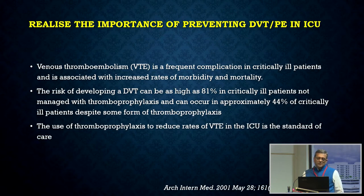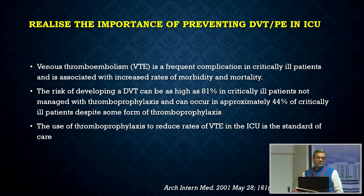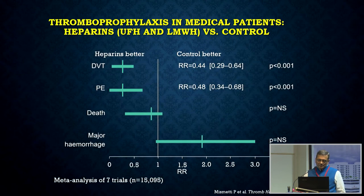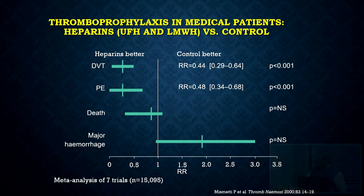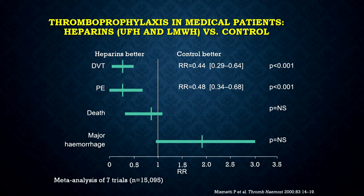The use of thromboprophylaxis to reduce rates of VTE in ICU is the standard of care. It will be an act of omission if you have not given thromboprophylaxis to a relevant patient in the ICU. Data from several randomized studies of heparins versus nothing clearly showed that in an ICU or medical setup, you could prevent DVT, PE, and deaths or morbidity by the use of heparins.